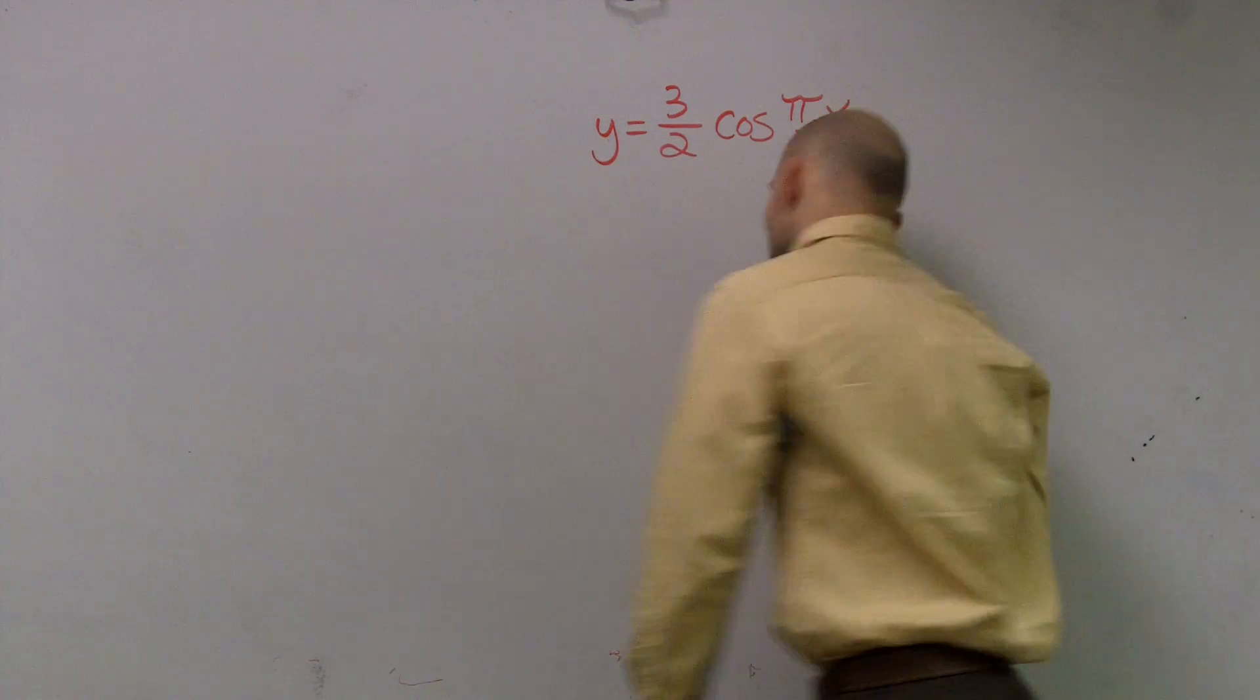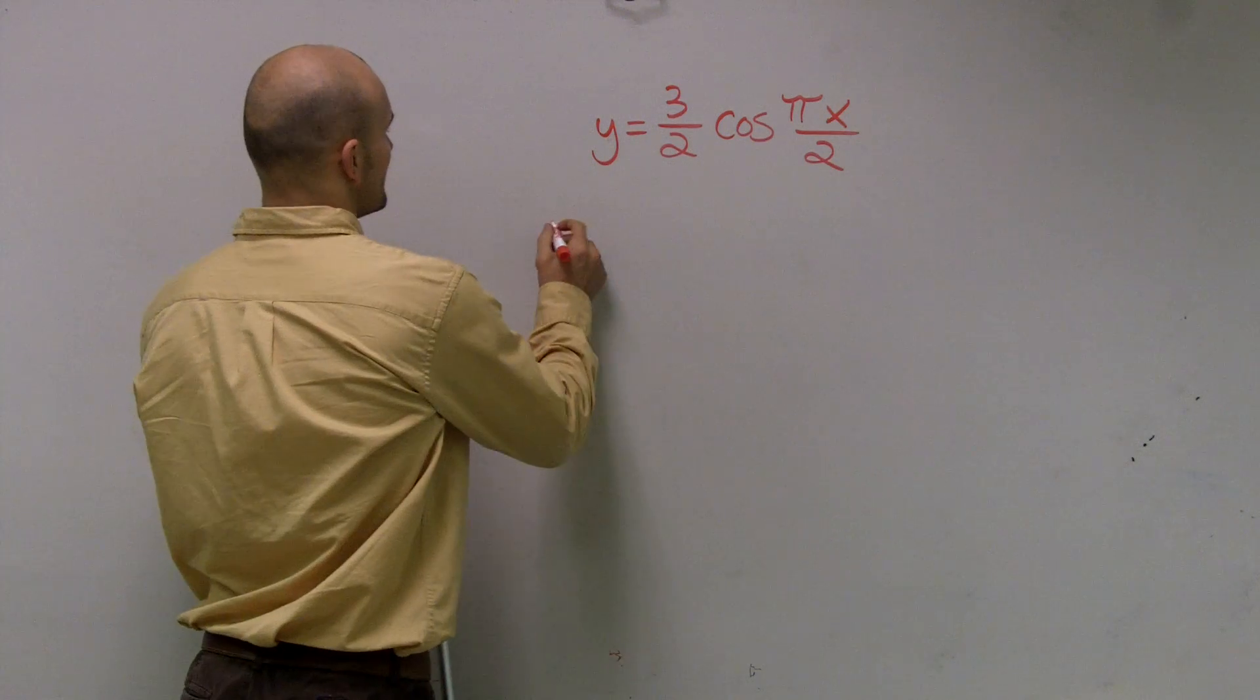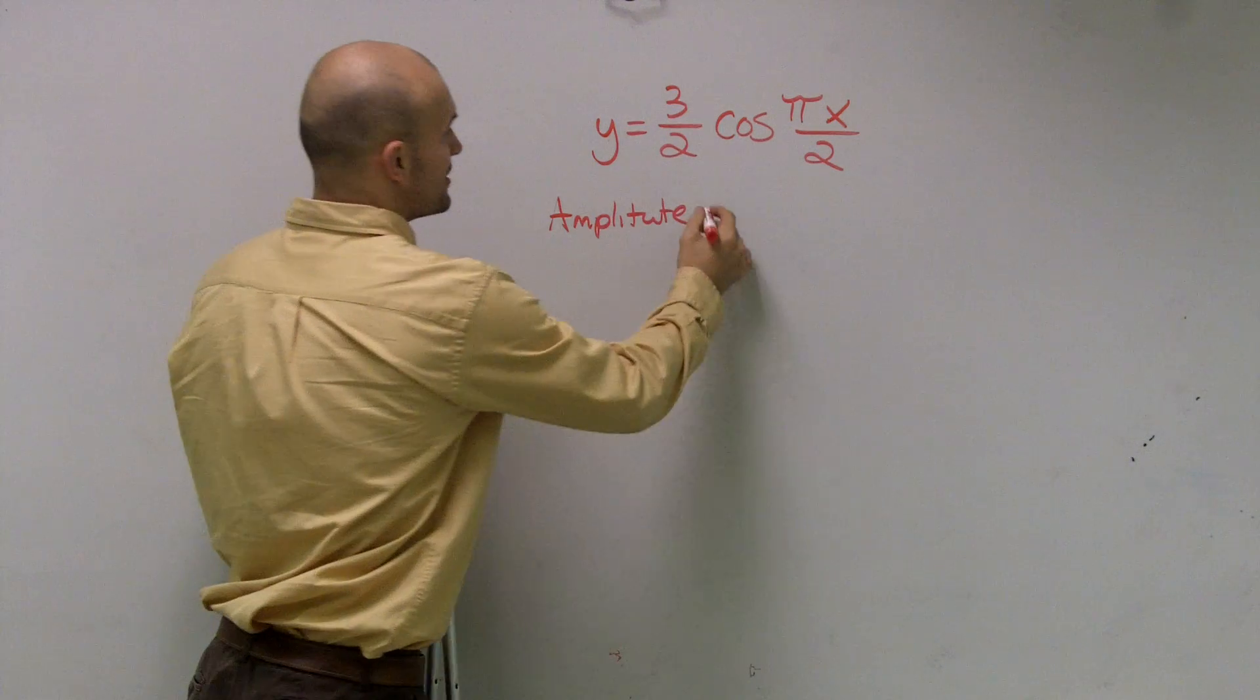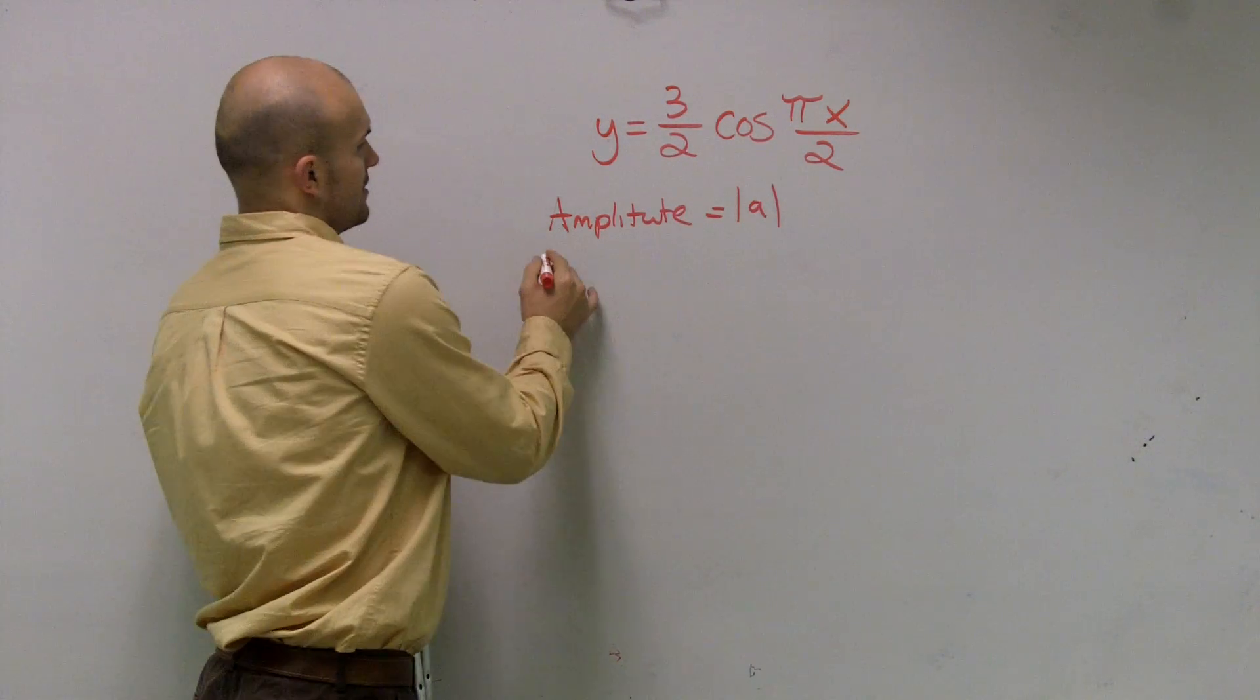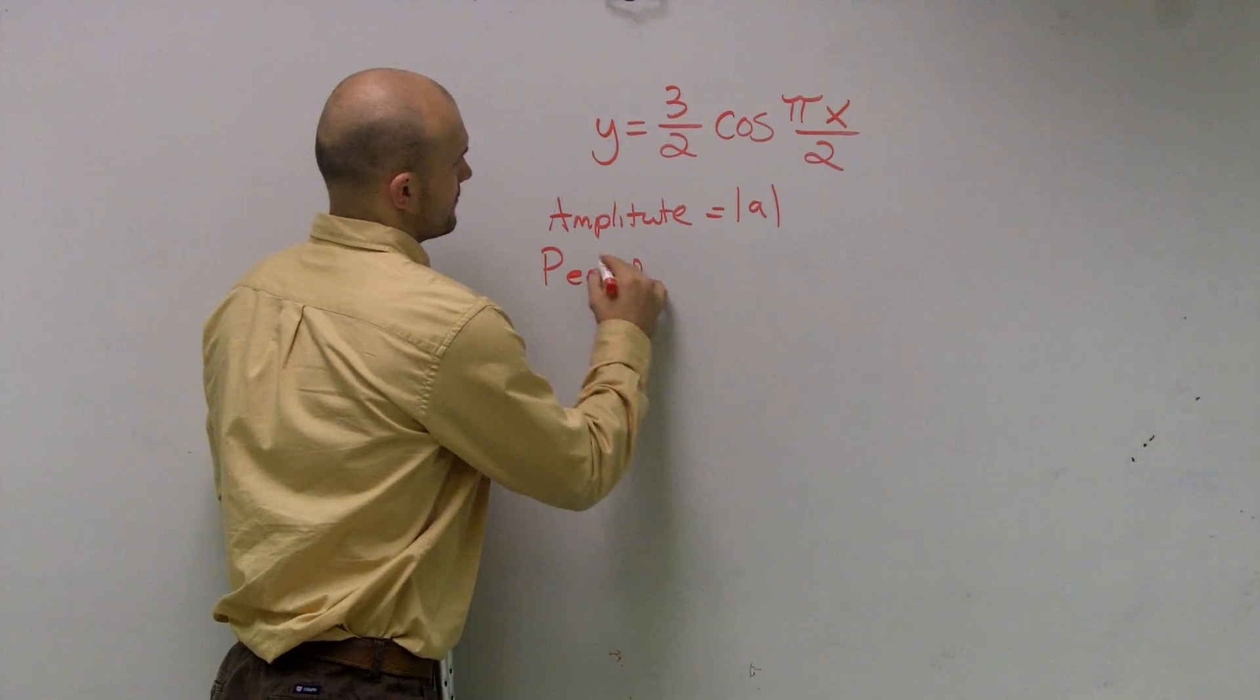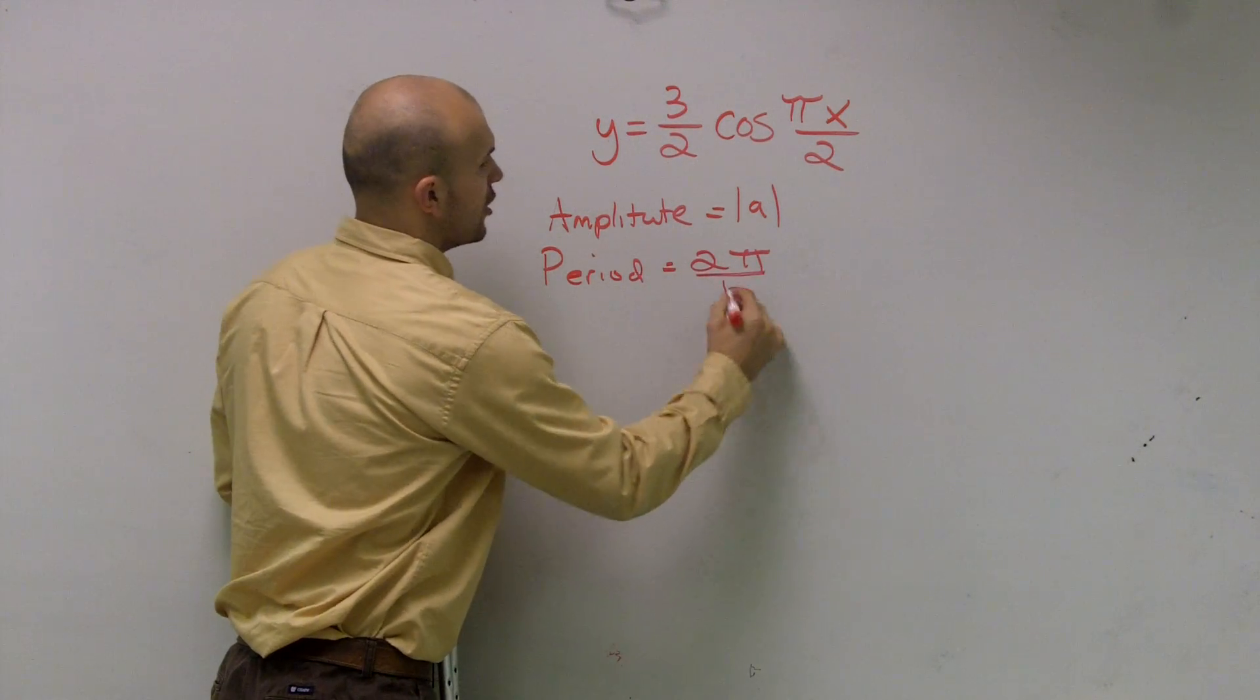There's a couple of simple rules for our amplitude and period. The amplitude, if you guys remember, is just the absolute value of A, and the period is equal to 2π over B.